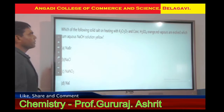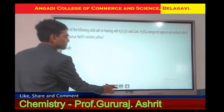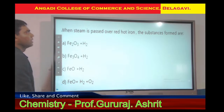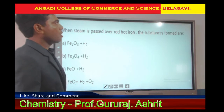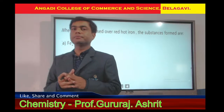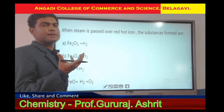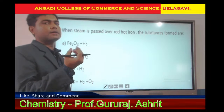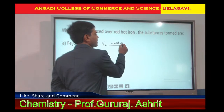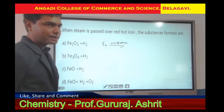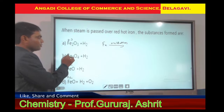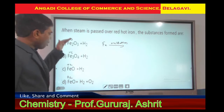The first question asks: when steam is passed over red hot iron, the substances formed are — you need to write the reaction of iron with steam. You should know that water has fewer molecules, while steam contains more molecules. Also, iron undergoes oxidation when reacted with other compounds. As it is a transition element, it will not reduce. Looking at the options, the charges on iron are +3, +2, and +2 in some ratio.